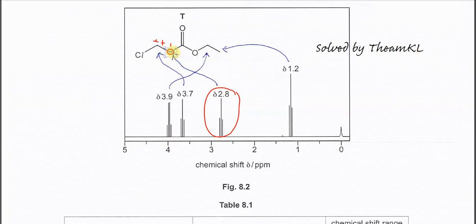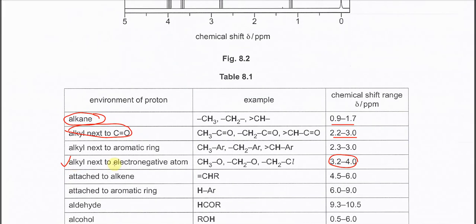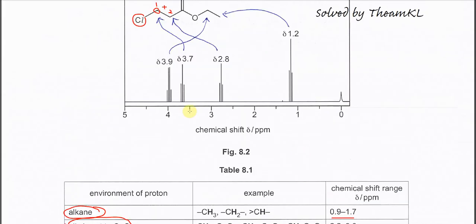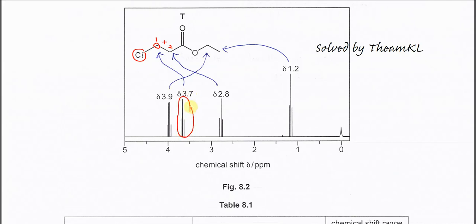The last CH2 also has an adjacent carbon with two protons, so it's 1+2, giving triplets as well. These triplets must be around 3 to 4 ppm because this CH2 is next to the electronegative chlorine atom. Alkyl next to an electronegative atom has a chemical shift around 4, so these triplets at around 3 to 4 ppm belong to this CH2. This is how we deduce the NMR spectrum.